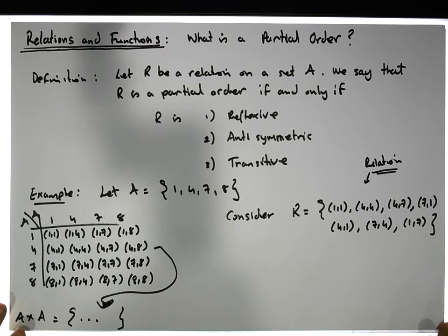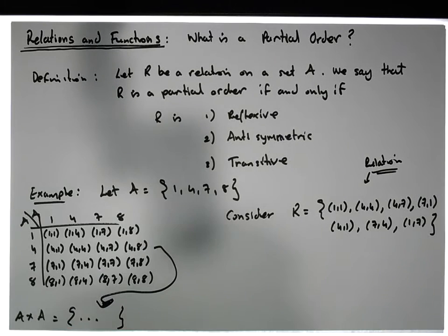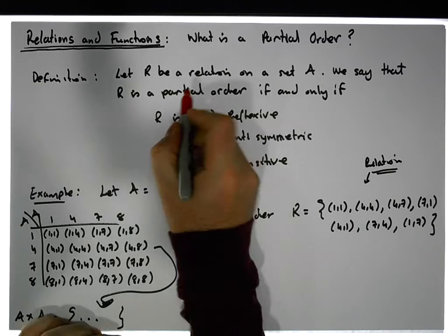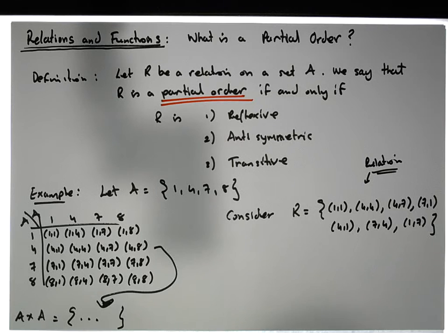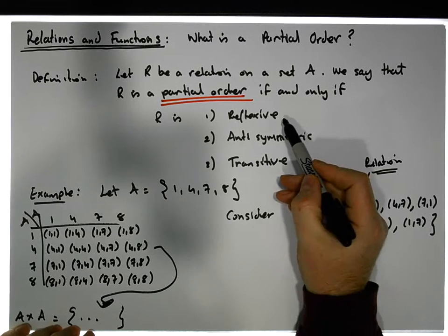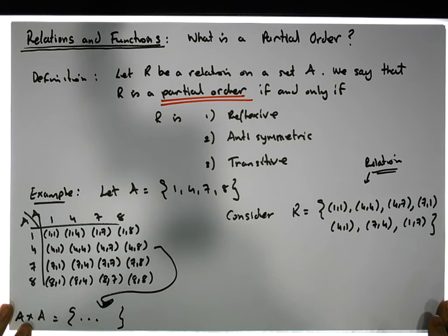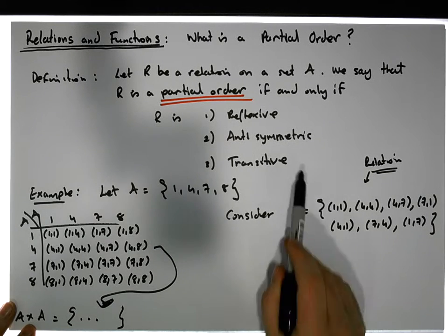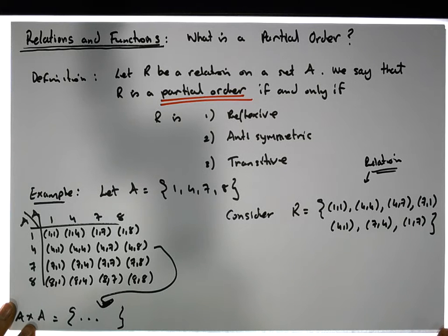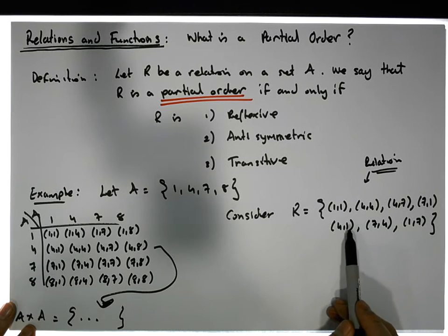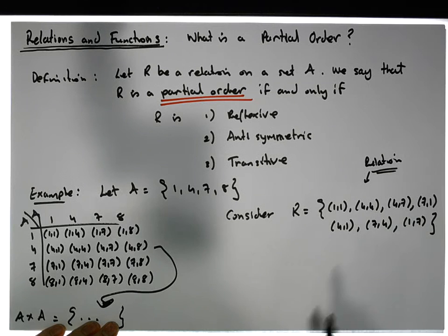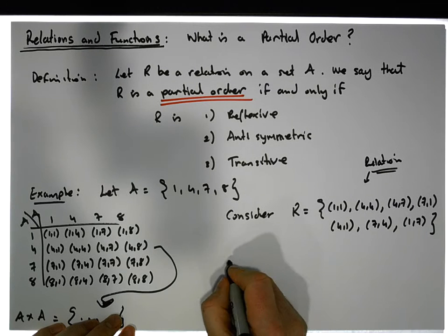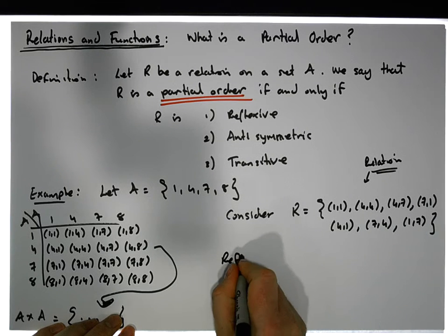Now, is this relation a partial order? For it to be a partial ordering, it needs to be reflexive, anti-symmetric, and transitive. Let's check: is this relation reflexive first of all?